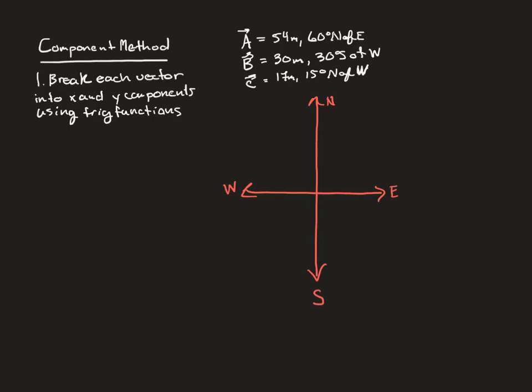In this lecture video, we're going to learn how to use the component method in order to add vectors together. A vector has both magnitude — a size — as well as a direction, an angle relative to some zero point that the object is traveling at. In order to add together two quantities that have both magnitude and direction, we use the component method, which breaks vectors into components: the amount the vector is going in one direction versus the other.